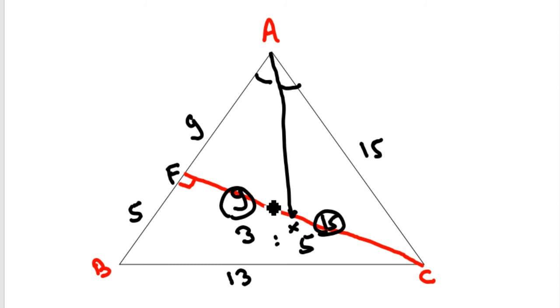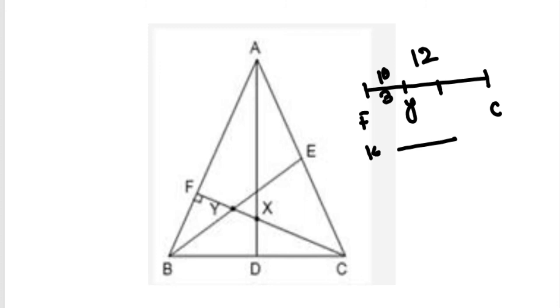So again we can say FX is nothing but 3 out of 8 into 12. That is 2x and 3x. So this is nothing but 9 by 2. So FX is 9 by 2. I hope this one is clear. This one is 9 by 2.